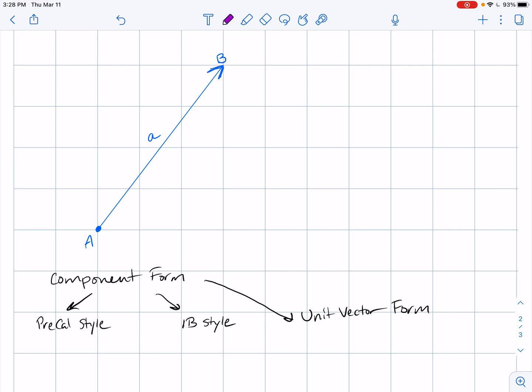On this vector you can call it vector AB and we typically put an arrow that shows that it's starting at point A and ending at point B and the arrow tells us which direction it's going.